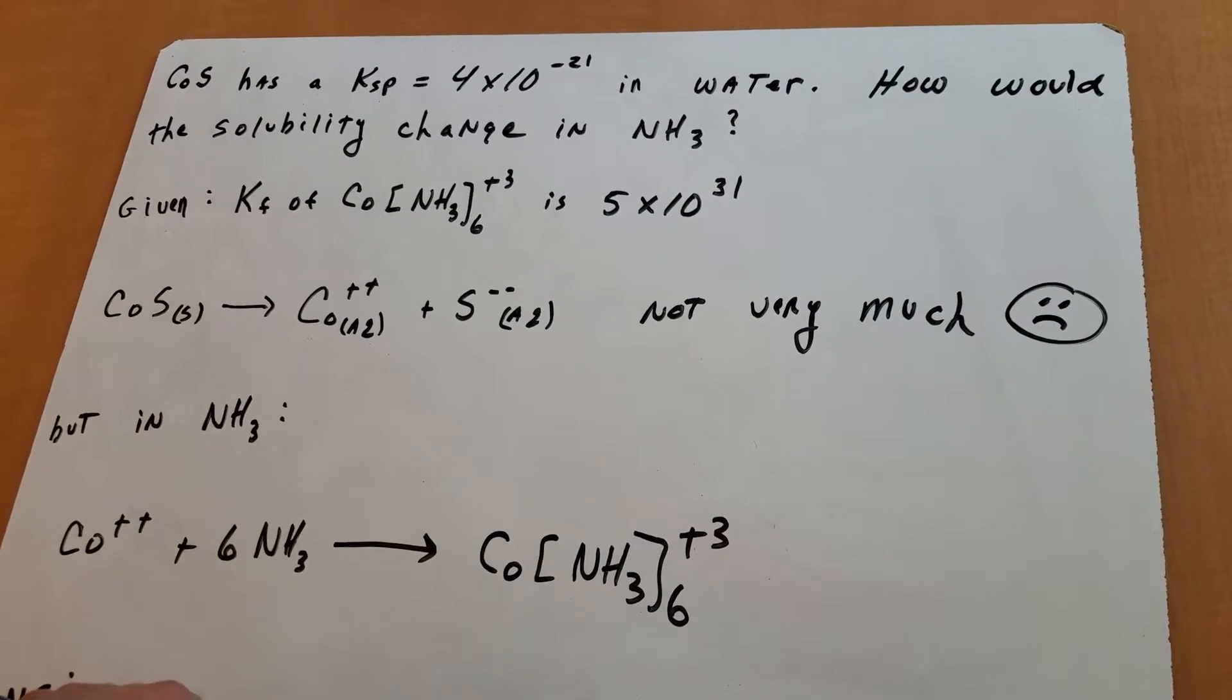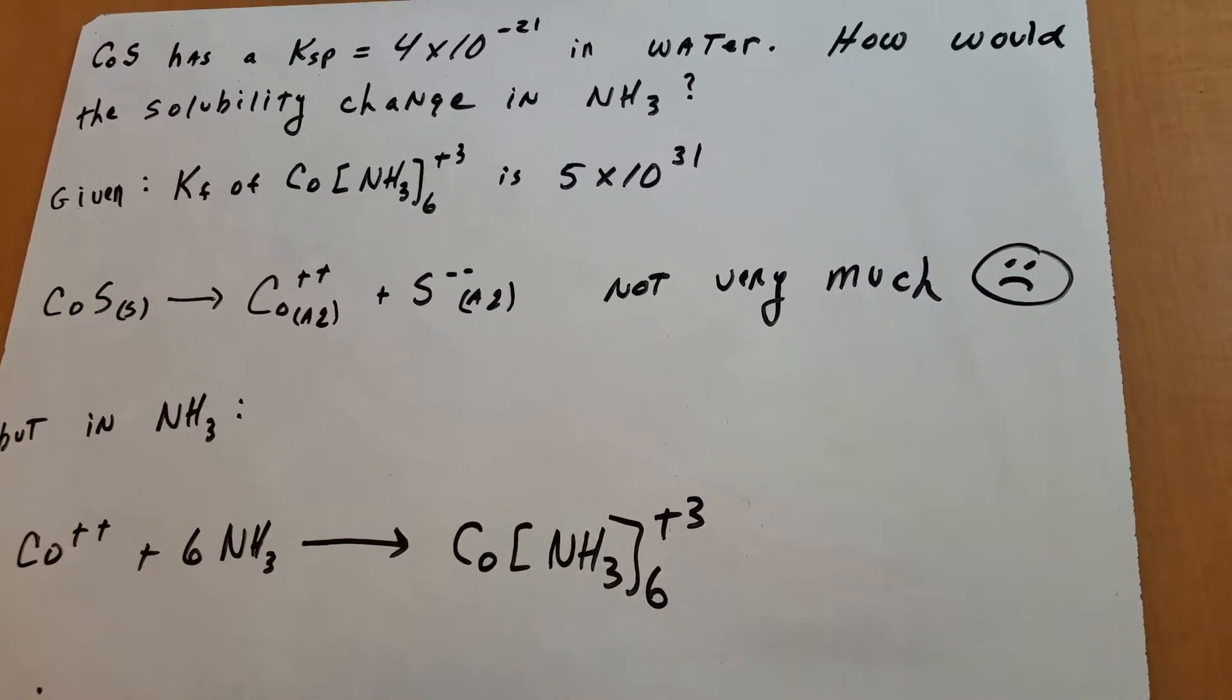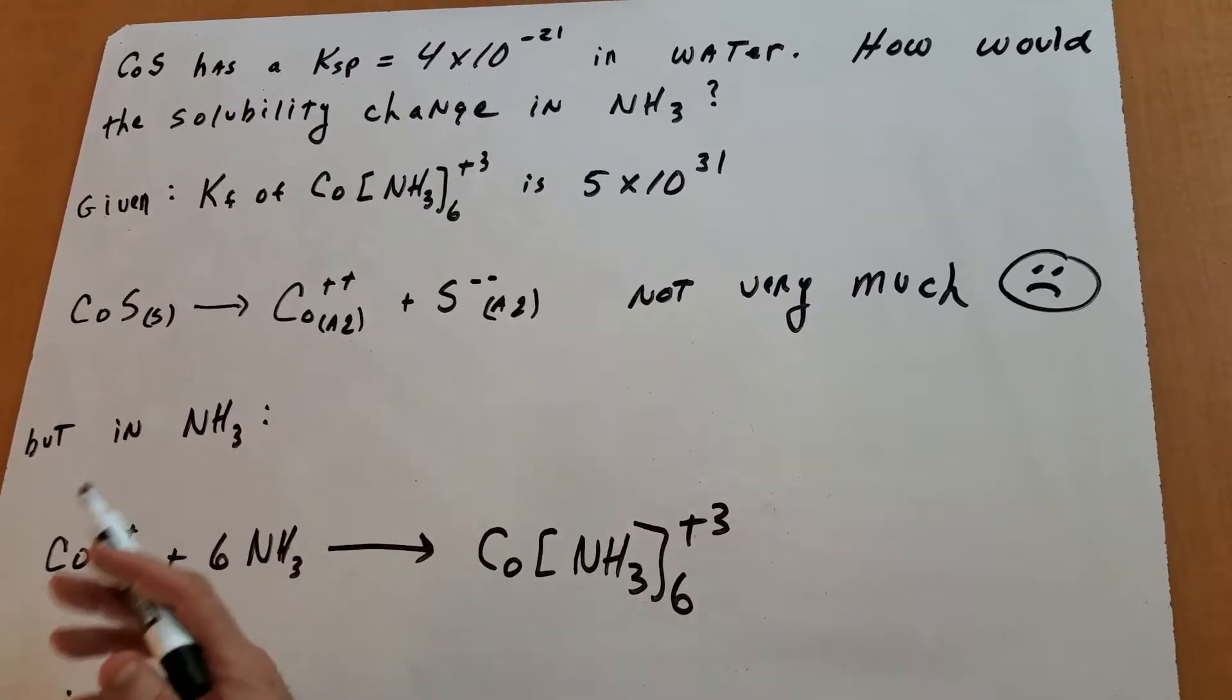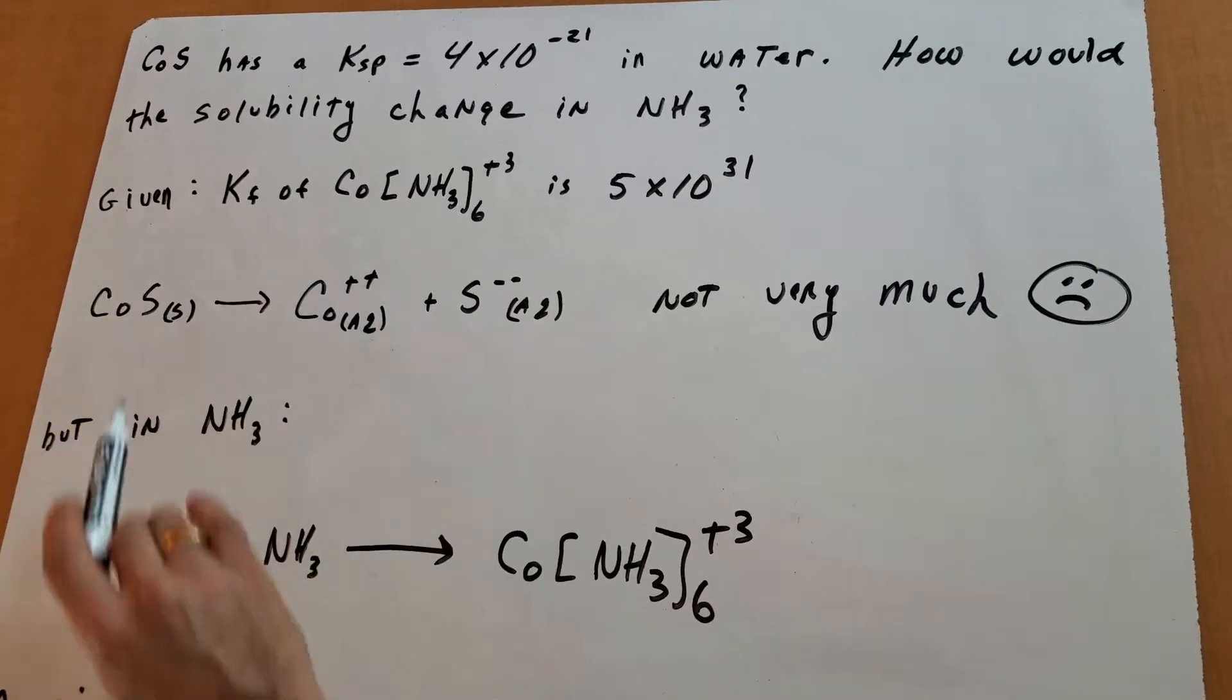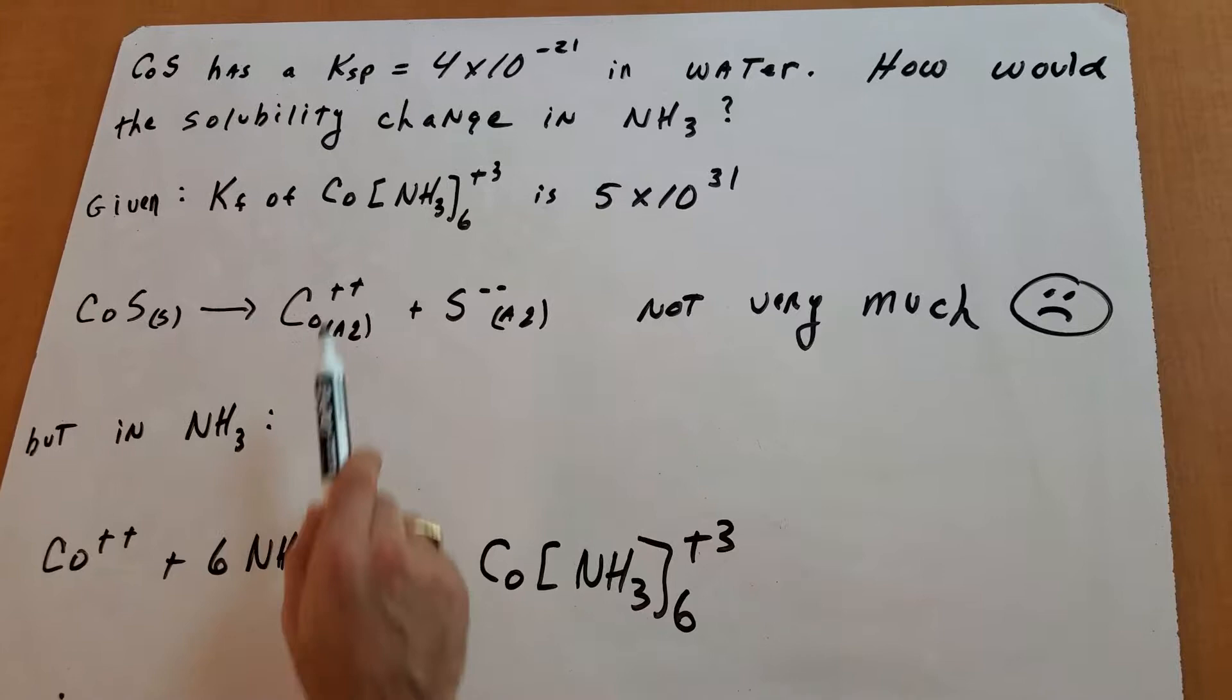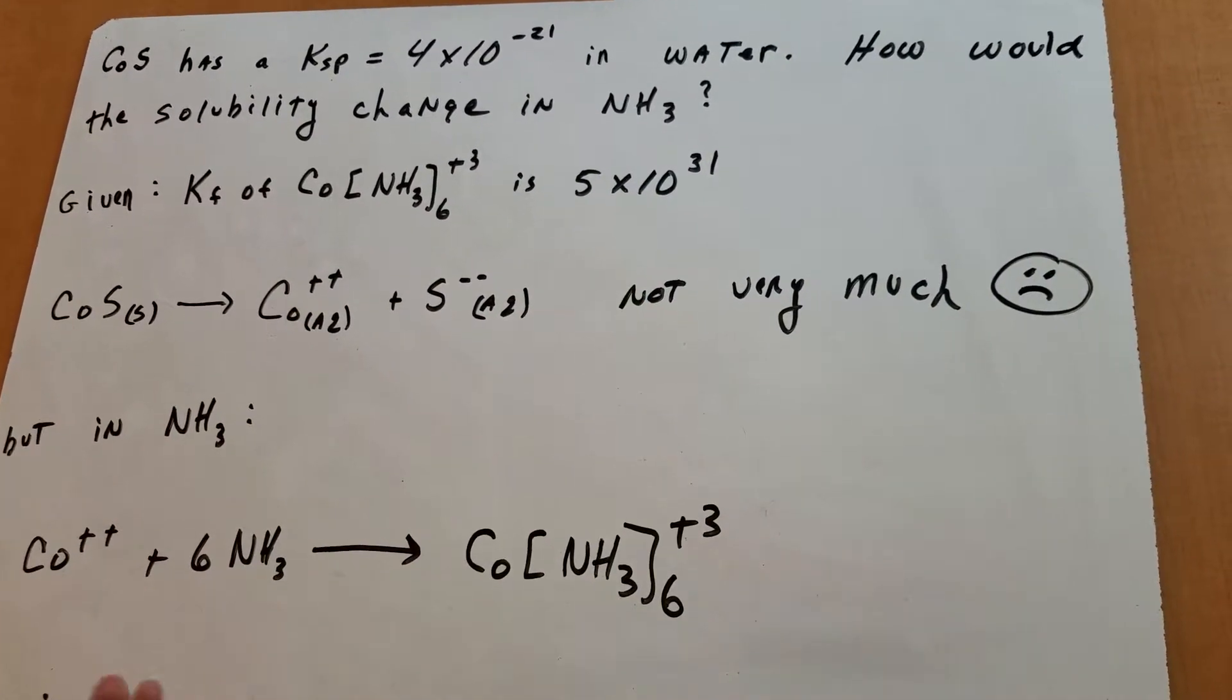Whenever they give you the Ksp of something, always assume it's in water. Now, I want to know how would the solubility change if you put the solvent in ammonia? And I also gave you what we call the formation constant of a complex ion, and it's 5 to the 31.